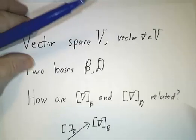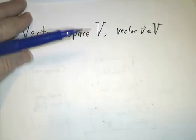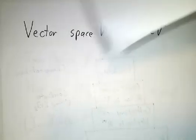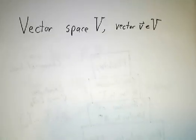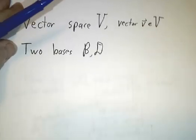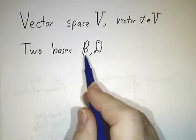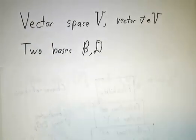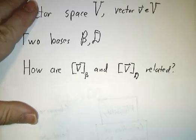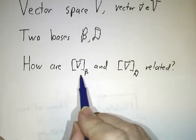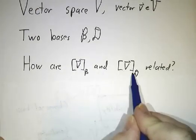Here's the setup. Let's suppose we have a vector space V, and we've got a vector v in that vector space. Let's suppose we've got two bases, the B-basis and the D-basis. The question is: how are the coordinates in the B-basis and the coordinates in the D-basis related?